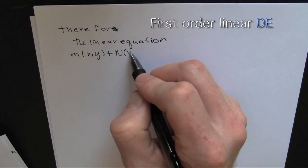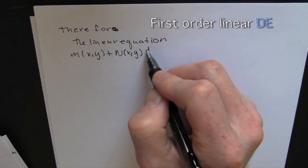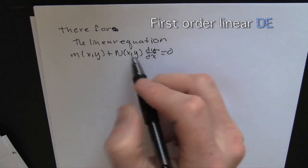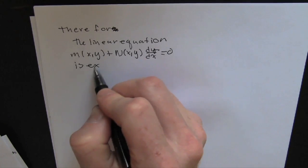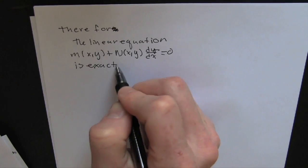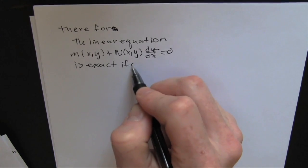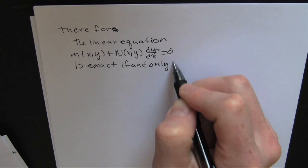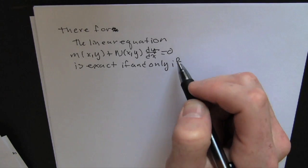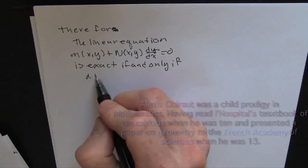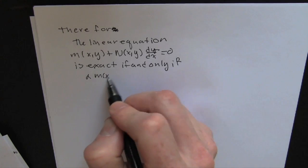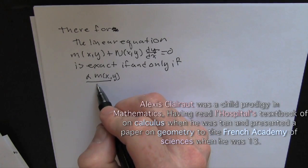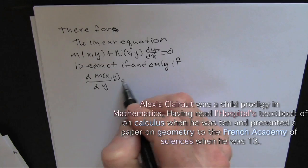This is a first order linear differential. We take it in linear form. It's exact if — now we're gonna fit it to Clairaut's theorem. Those partials fit the total differential.